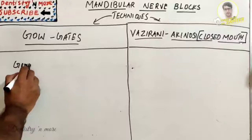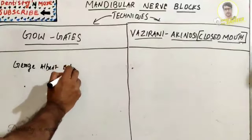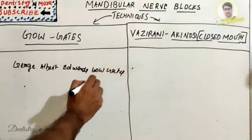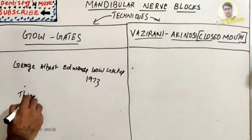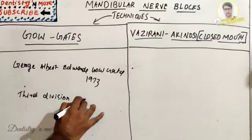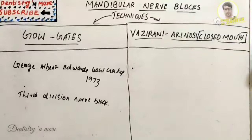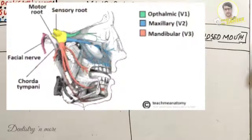The Go-Gates technique was introduced by George Albert Go-Gates in 1973. It provides sensory anesthesia to all branches of the posterior division and the buccal nerve. Another name for this technique is the third division nerve block, as it anesthetizes the posterior division or third division of the mandibular nerve.